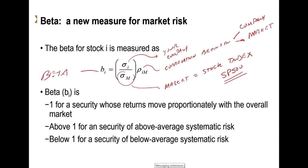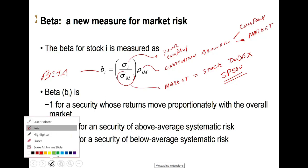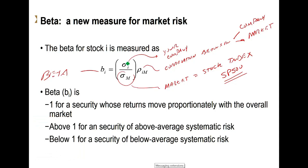So let me give you an example. Suppose that the standard deviation of your company — the volatility of your company — is 30%. And suppose that the volatility of the market is 15%. So just by what's in the parentheses alone, that means that your company is twice as risky, twice as volatile as the market. 30 divided by 15 is 2.